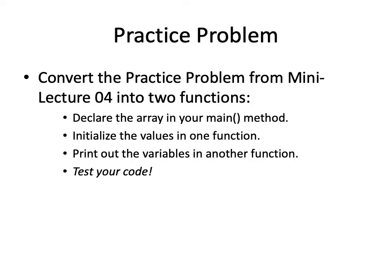In mini-lecture number four, I challenged you guys at the end to write some code that would first declare an array, then would initialize all of the values of that array to be equal to the array index divided by 100. And then I said, print that out, each element of the array. Now what I want you to do is I want you to take that and to create two functions to do those two operations. So the first function will initialize all the values of the array that you declared in main.